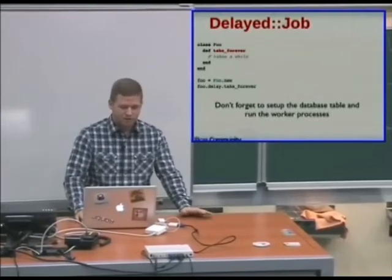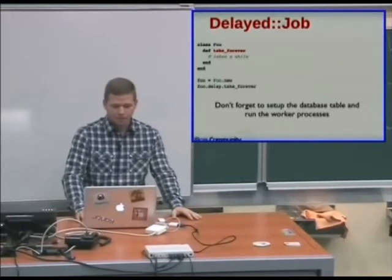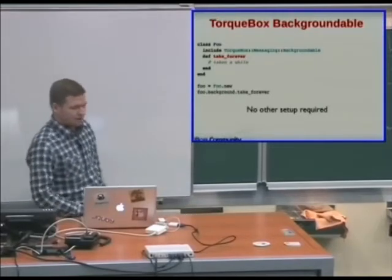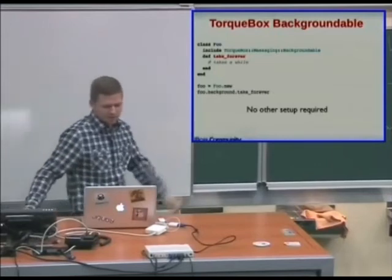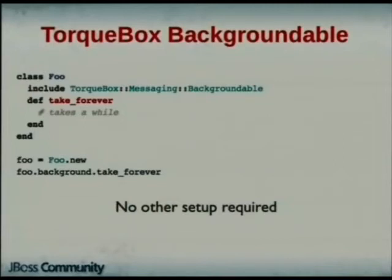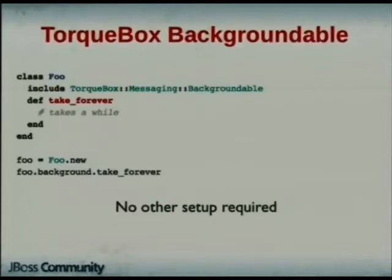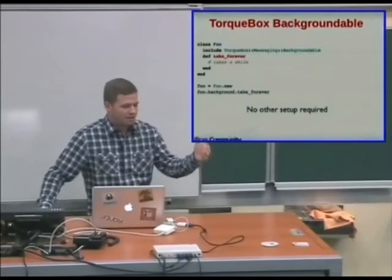With TorqueBox, this is the identical class. We just include one line: `TorqueBox::Messaging::Backgroundable`. Now you call `foo.background.take_forever` — almost identical to DelayedJob. The big advantage is you don't have to set up those external worker processes or do anything external. You deploy the application to TorqueBox, call that method, and it runs in the background on top of our messaging internally.